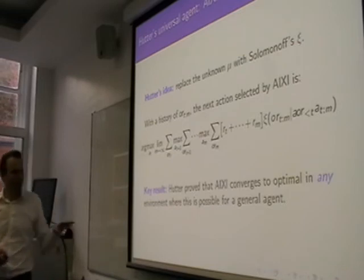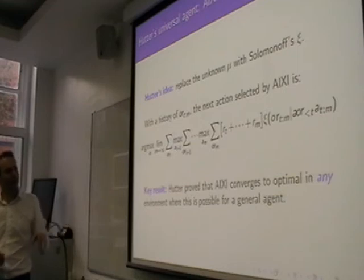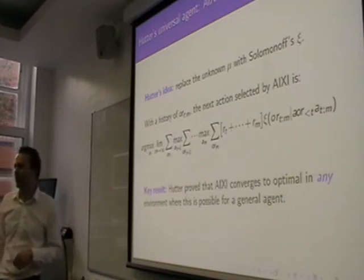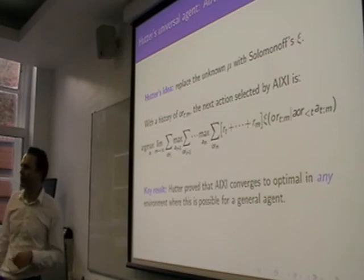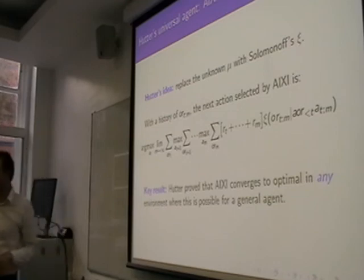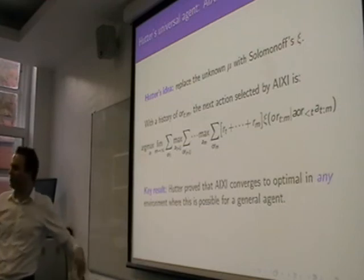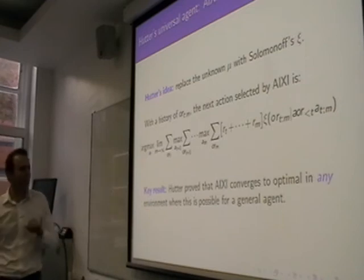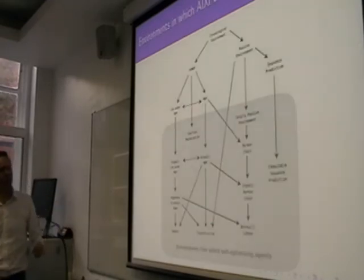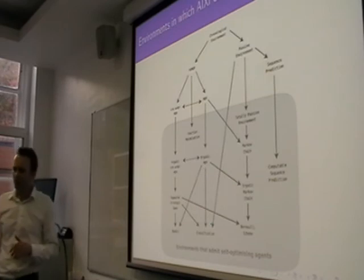So we have to have this sort of caveat here, where it's in any environment where this is possible for a general agent. And it turns out there are many environments where it is possible. So one of the things I did in my thesis was to try to spell out—oh, there are other optimality results, by the way. There's greater optimality, or balanced greater optimality. There's a whole bunch of different things. So one of the things I tried to do in my thesis is to spell out more exactly.